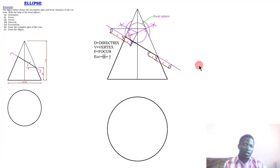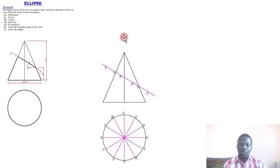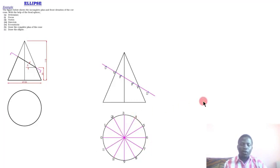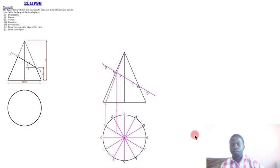That is how you determine the four items: focus, vertex, directrix, and eccentricity. Next, we move to part b — drawing the complete plan, which is how the cone looks when viewed from above. The first thing we do is divide the circle into 12 equal parts, numbered 1 through 12. We then project points from the plan to the base of the cone, and I'll consider point one to demonstrate the steps.